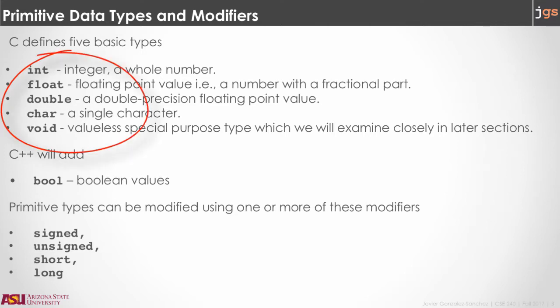The language C defines five primitive data types: int, float, double, char, and void. You will remember those keywords from Java. As we mentioned before, there is no boolean data type in C. C++ will add later the type bool, not boolean, but bool.